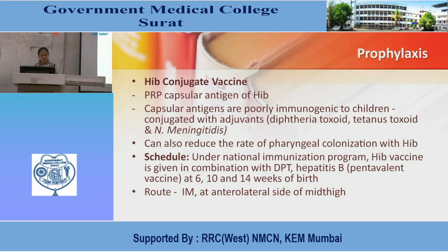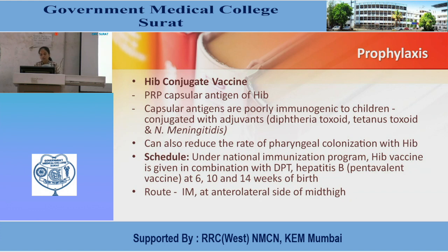Prophylaxis: Hib-conjugated vaccine. The PRP capsular antigen of Hib is poorly immunogenic in children; it is conjugated with adjuvants — diphtheria toxin, tetanus toxin, and N. meningitidis. This can also reduce the rate of pharyngeal colonization with Hib. Scheduled under the national immunization program: Hib vaccine is given in combination with DPT and hepatitis B as a pentavalent vaccine at 6, 10, and 14 weeks of birth. Route is IM at the anterolateral side of the mid-thigh.